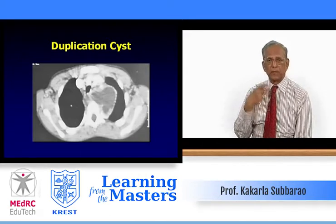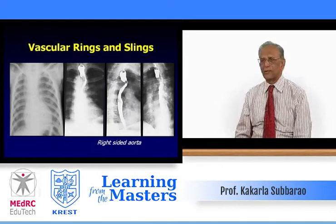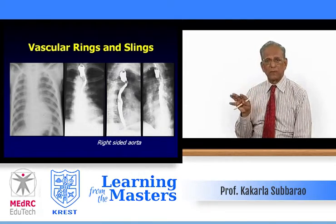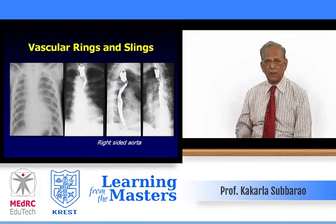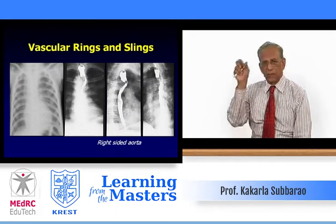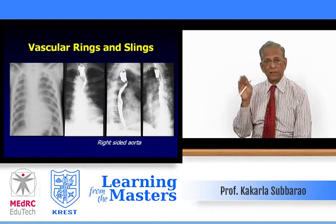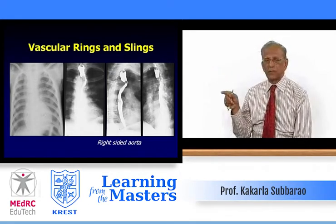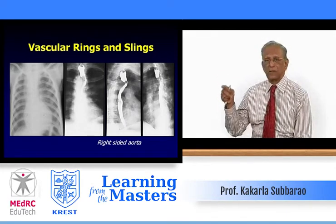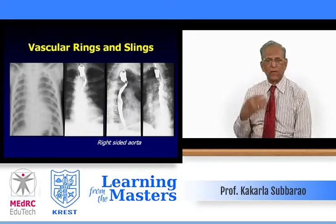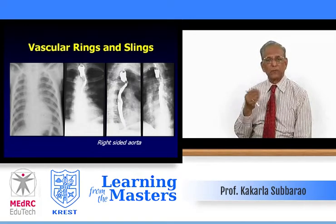Most of the time duplication cysts are anterior; occasionally they may extend to the middle mediastinum. Now we come to vascular rings. There are three types of anomalous aorta and vascular rings, but the most important is the right-sided aorta. Normally the trachea deviates slightly right because the aortic knob is on the left, but in this case on PA chest there is slight deviation to the left and absence of aortic knob — we think of a right-sided aorta. On barium swallow there is indentation on the right side instead of the left, and posterior indentation because the aorta passes posterior to the esophagus.